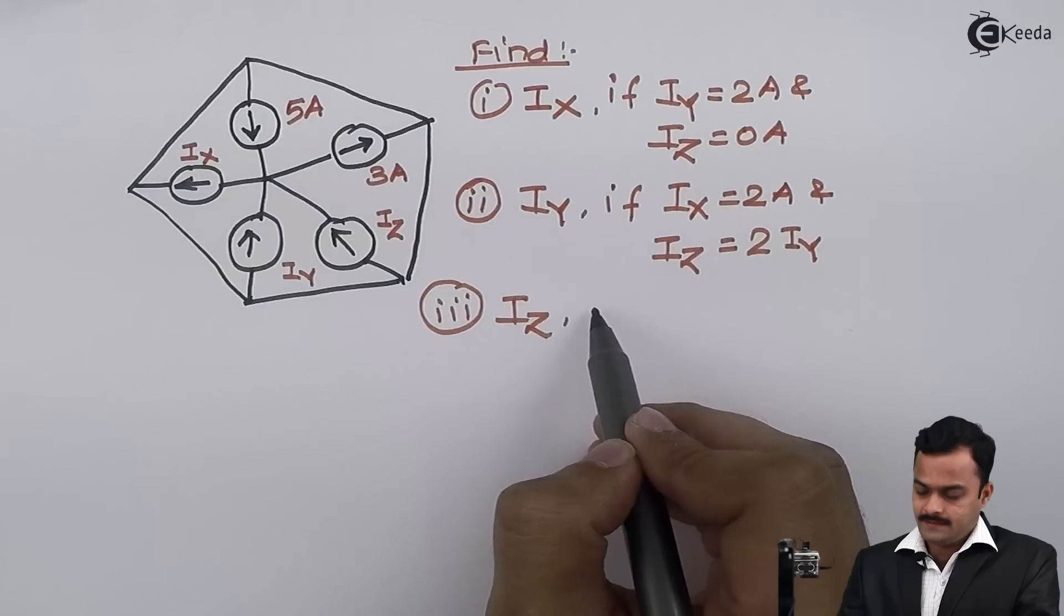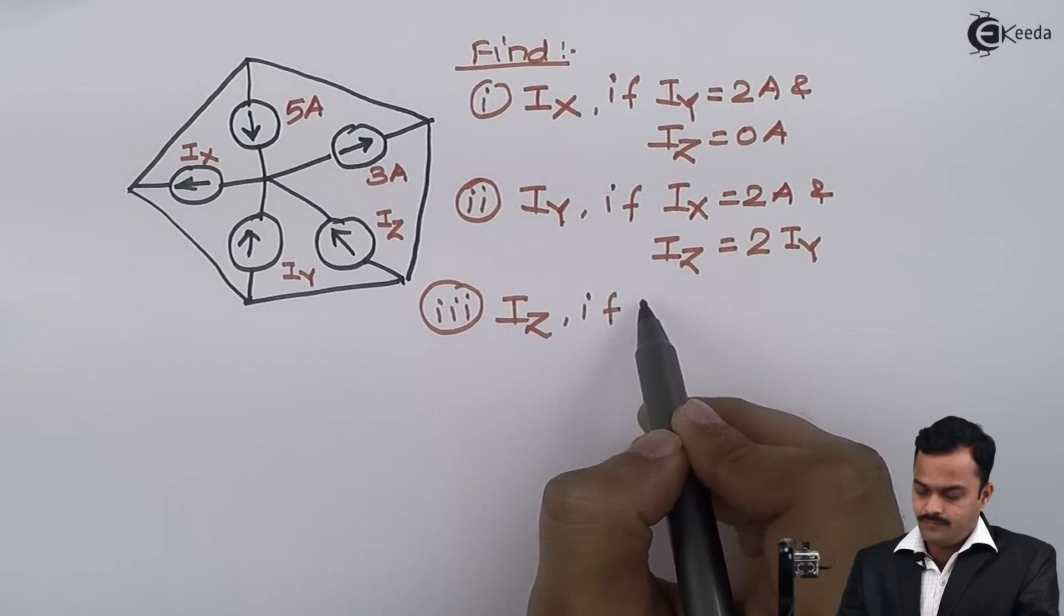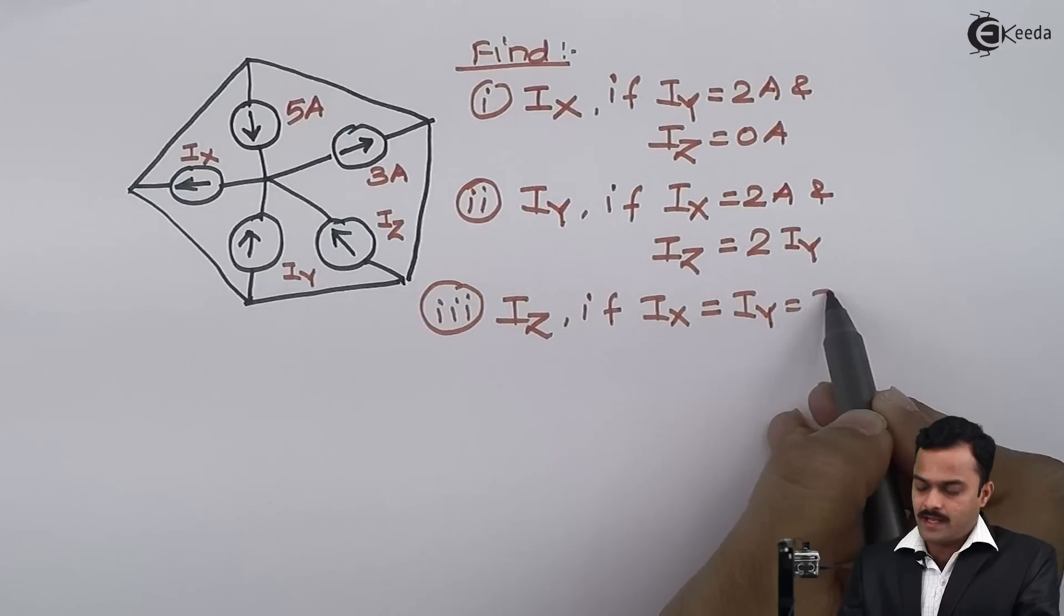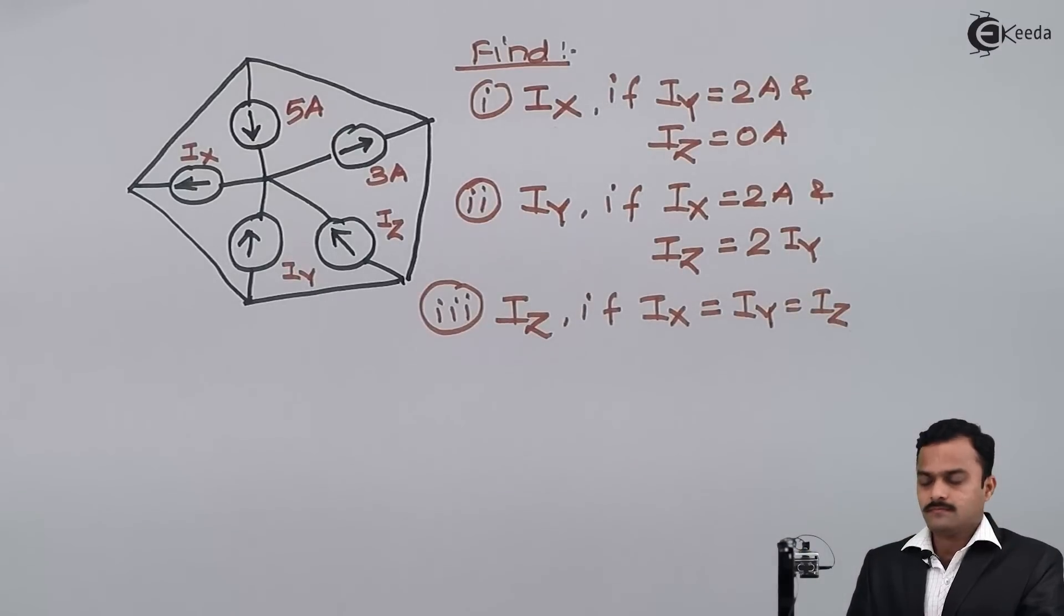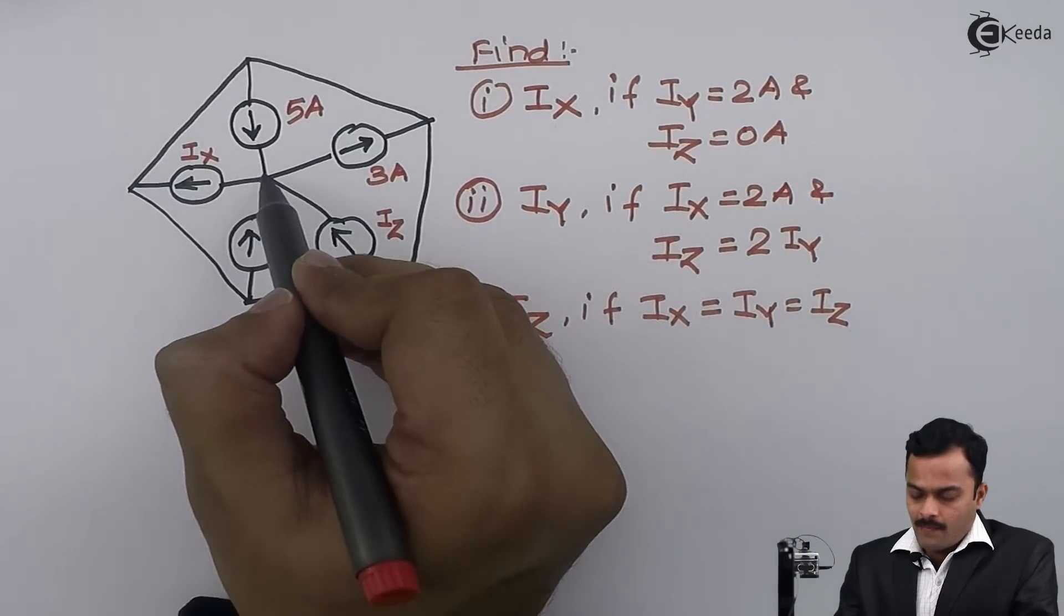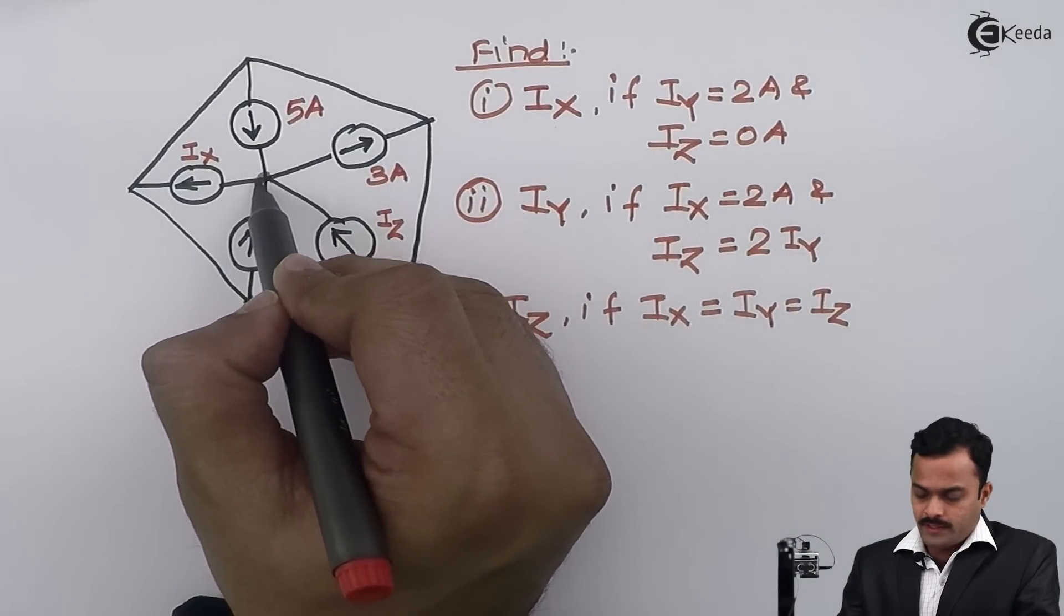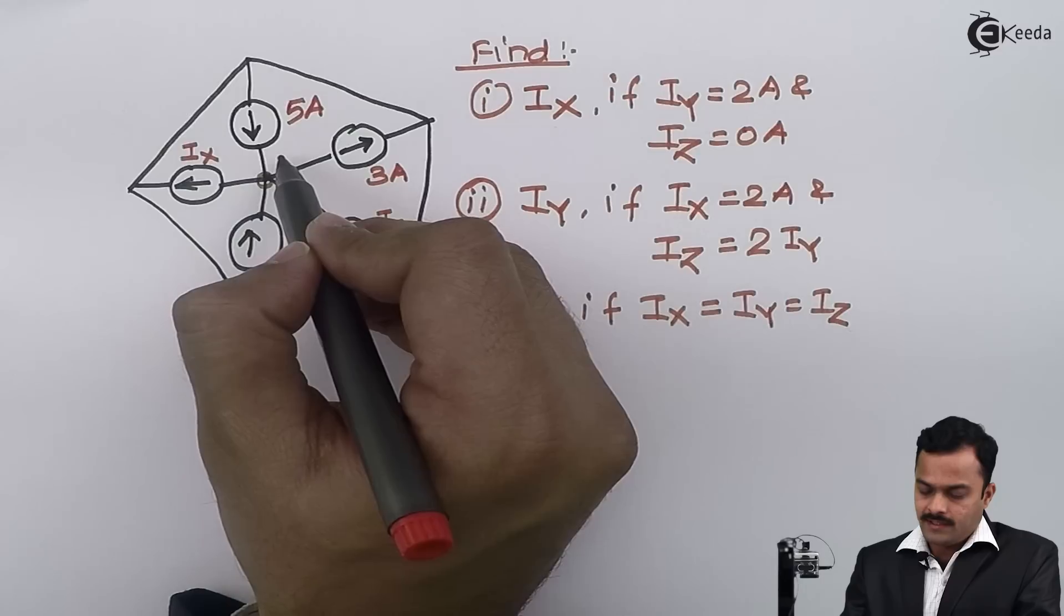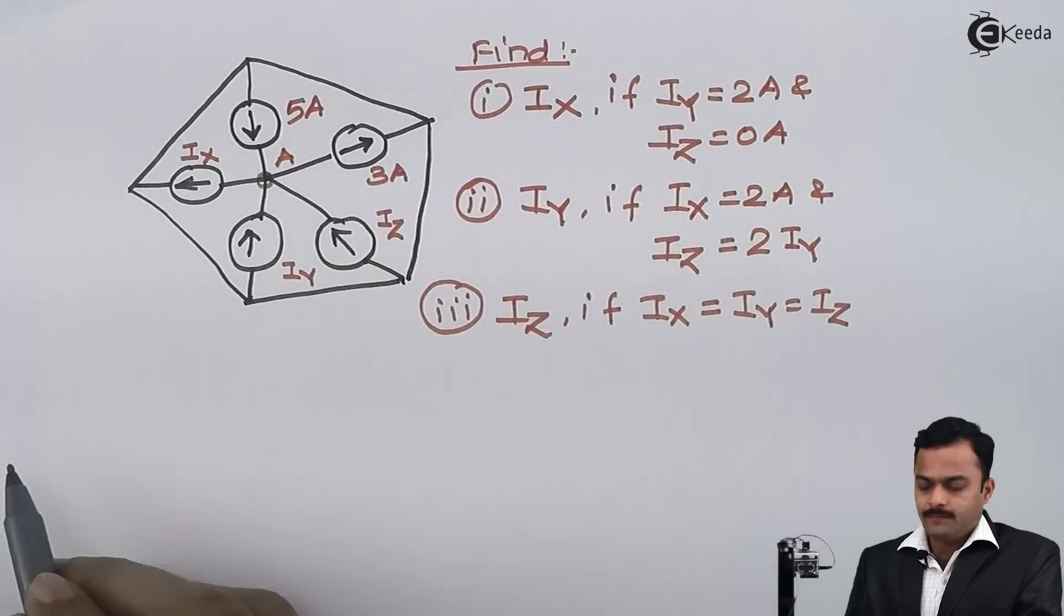And in third case, I am supposed to find out the value of iz if ix is same as iy is same as iz. I am having one junction or node over here because here more than two branches are connected, so I'll name here point A.